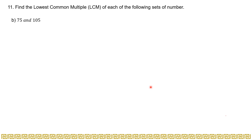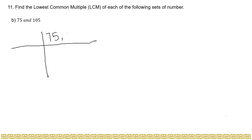In this question we are asked to find the Lowest Common Multiple. I am solving the even parts here, and the odd parts you guys are going to solve. So let's start from Part B, which is 75 and 105. For this we simply have to do the prime factorization of 75 and 105.